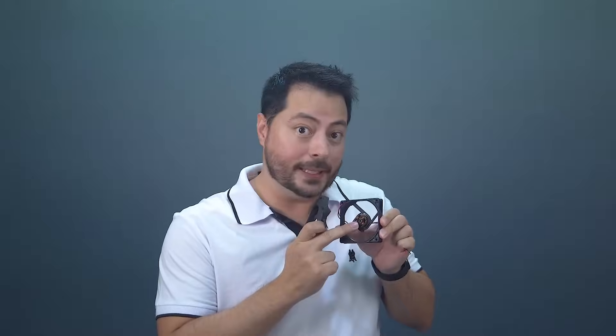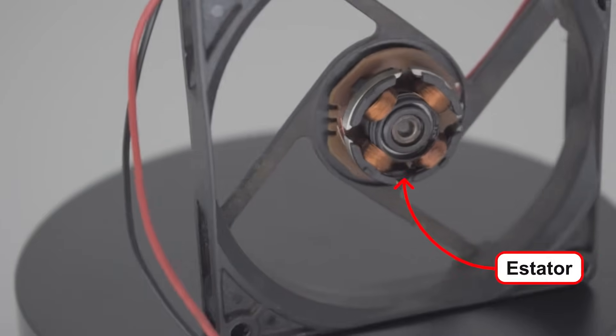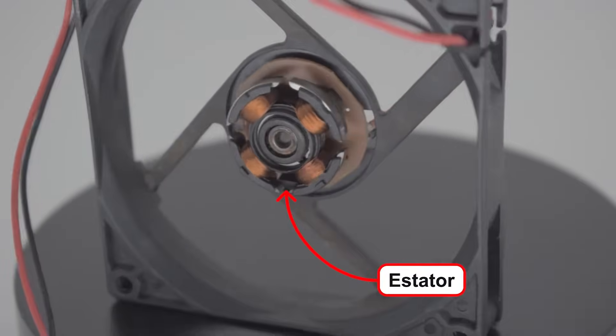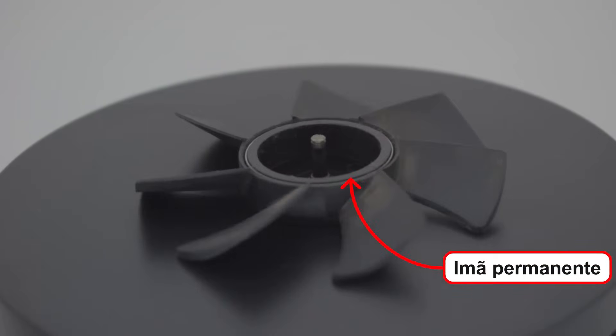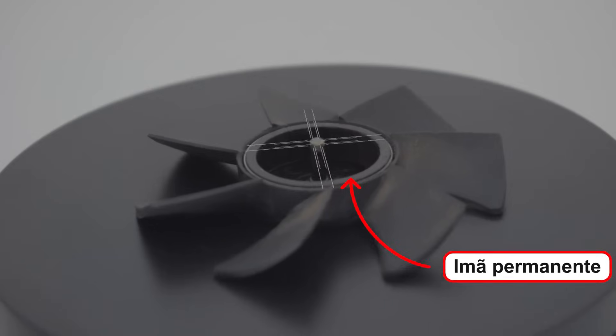The stator, which is this little part here, contains the coil windings which are fixed and don't move. The rotor, in turn, contains permanent magnets and is the part that spins when electrical power is applied to the stator. It controls the magnetic field of the stator coils and with that it controls the rotation of the motor according to the magnetic field.